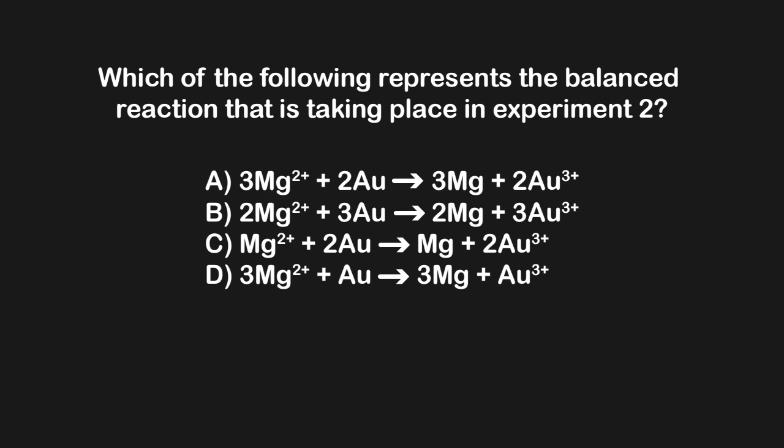This one says, which of the following represents the balanced reaction that is taking place in experiment two? We haven't been given passage information, which you probably would have been given in this case. But remember, we're just approaching this from this pure strategy piece where we're looking to see if the equations actually match up and could they actually be balanced. We're going to start with charge. So we'll start with A. On this side here, we have 3Mg2+. So that is a total of 6+. And on this other side, here we have a 2, and it goes to a 3+. So in this particular case, that's also 6+. So A is a potential answer that could be correct.